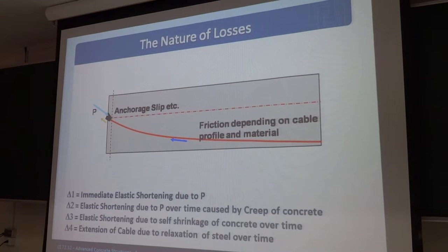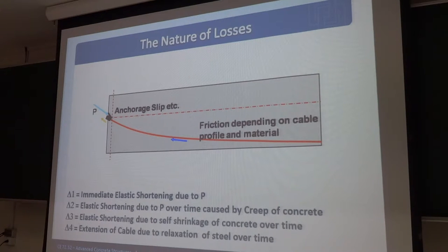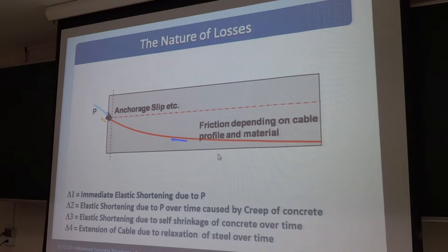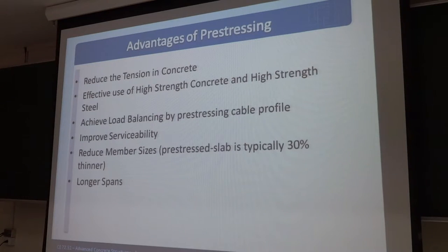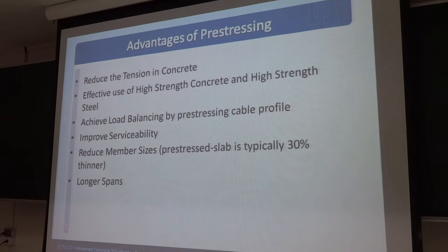That is a picture of pre-tensioning. That is a picture showing the anchorage which is slipping — for the anchorage loss. Another is friction due to the parabolic tendon. For the advantages, as explained before, prestressing will reduce the tension in concrete and prevent cracking. It is also effective for high-strength concrete and high-strength steel. We can achieve load balancing by the prestressing cable profile.